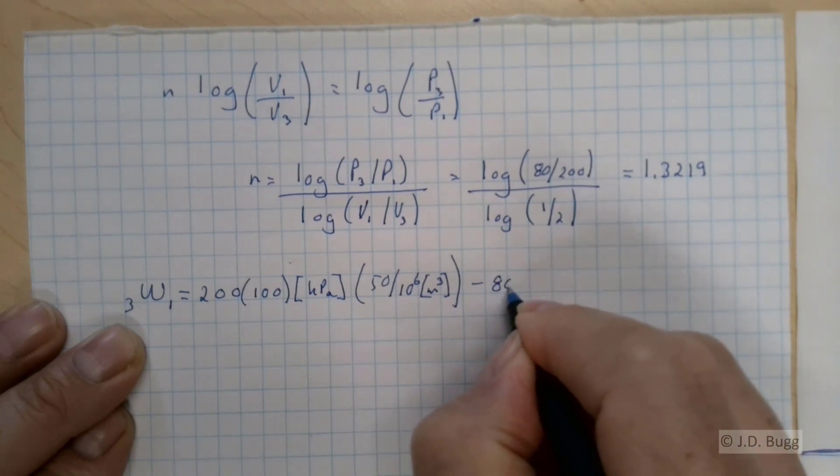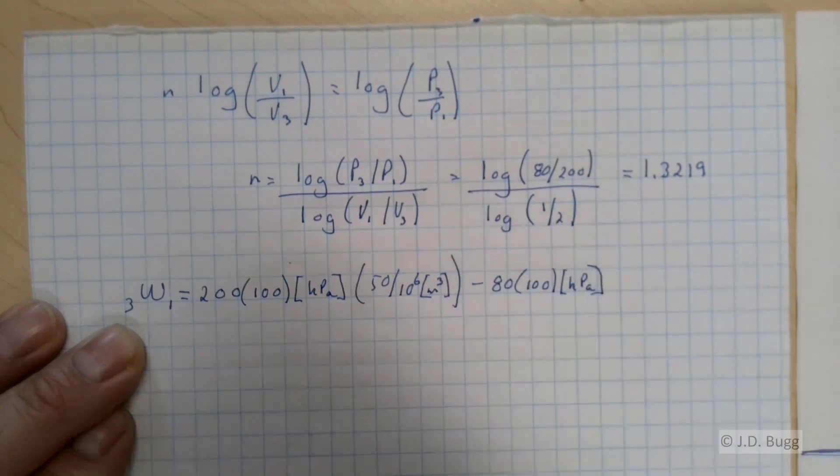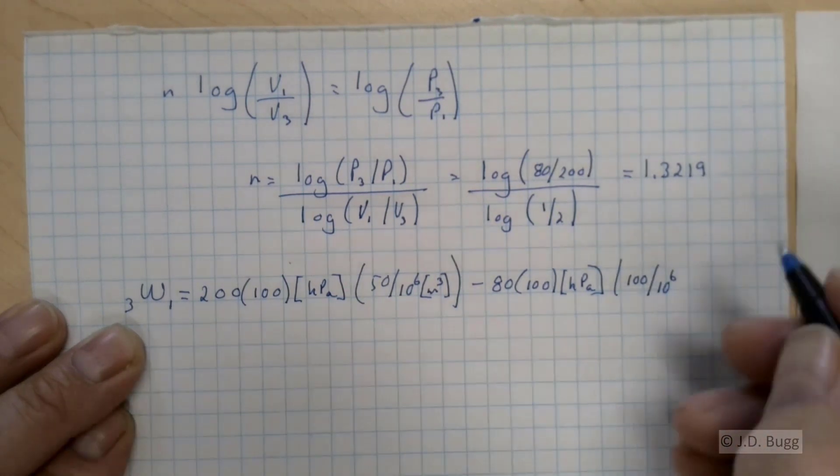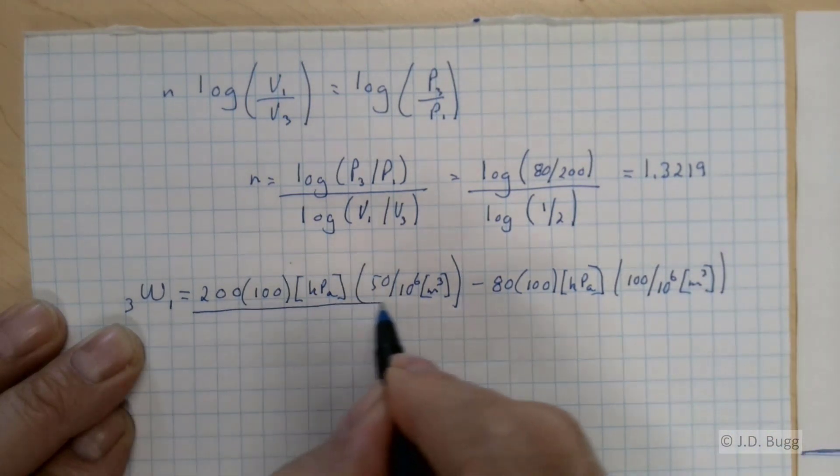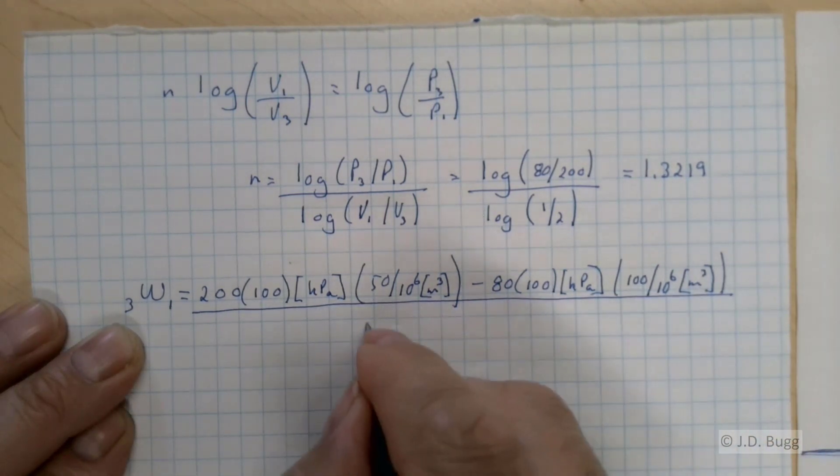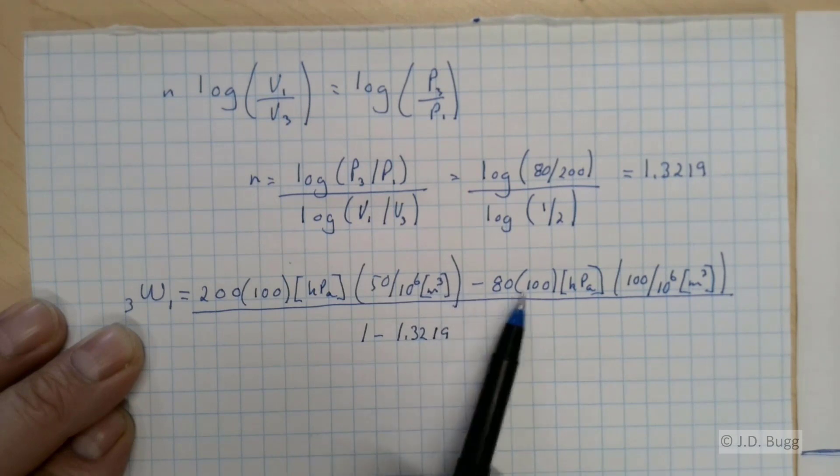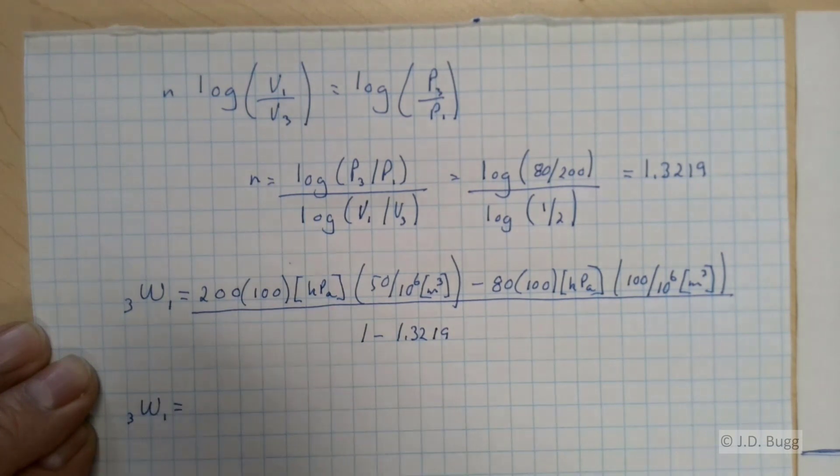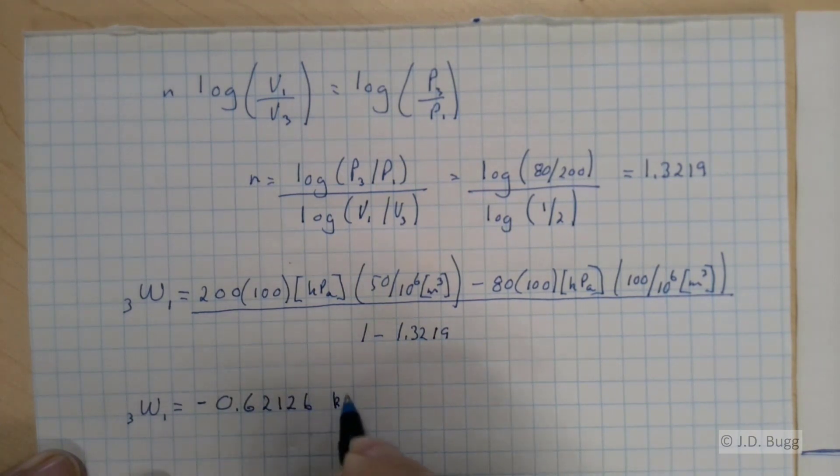Minus P3, it's 80 bar, but we need to multiply that by 100 to get to kPa. And then the volume is 100 centimeters cubed. So divide by 10 to the sixth to get meters cubed. And then that whole thing is divided by 1 minus 1.3219. So our work from 3 to 1 works out to negative 0.62126 kilojoules.